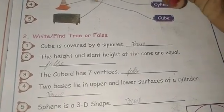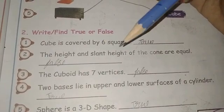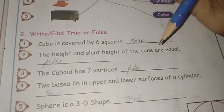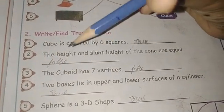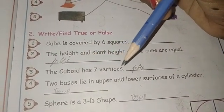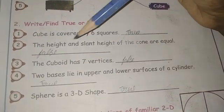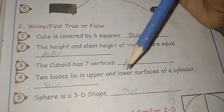The height and slant height of a cone are equal. Is it equal? No, false. The cube has seven vertices. It's true? No, it's false. Two bases lie in upper and lower surface of a cylinder.